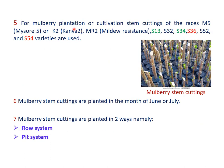For mulberry plantation, stem cuttings of the varieties Mysore 5 (M5), Kanva 2 (K2), Mildew Resistance (MR2), S13, S32, S34, S36, S52, and S54 are generally used. S13 and S34 are well suited for rainfed conditions, and S36 and S54 are suited for irrigated conditions. Mulberry stem cuttings are planted in the month of June or July in two ways: the row system and the pit system.